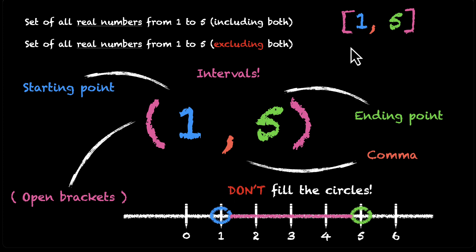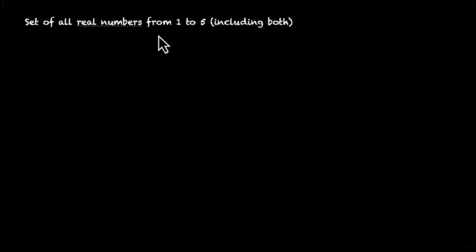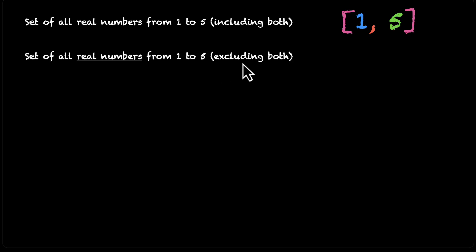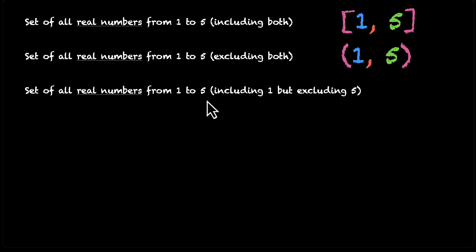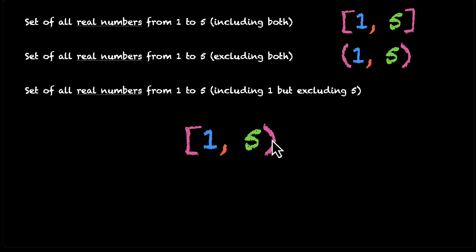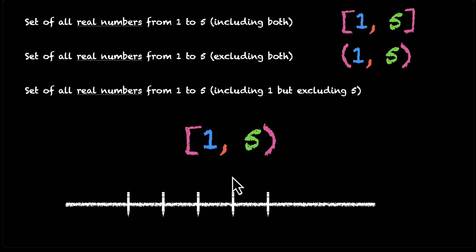So now we've seen both cases: including both points and excluding both points. We can also mix and match. Using closed brackets gives all real numbers from 1 to 5 including both; using open brackets excludes both. We can also include 1 but exclude 5: use a square bracket for 1 and a curved bracket for 5. This set has all real numbers from 1 to 5, including 1 but not 5. On the number line, 1 is a filled circle and 5 is an open circle, connected together.